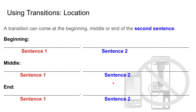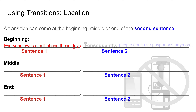Now let's talk about location. A transition can come at the beginning, middle, or end of the second sentence. At the beginning: 'Everyone owns a cell phone. Consequently, people don't use pay phones anymore.' Don't forget the comma.